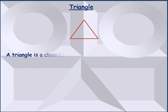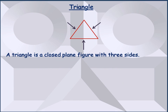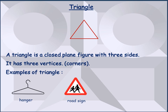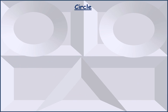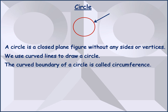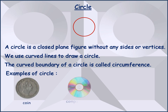A triangle is a closed plane figure with three sides and it has three vertices. Examples of a triangle are a hanger, road sign, and sometimes flags which have the shape of a triangle. A circle is a closed plane figure without any sides or vertices because we use curved lines to draw a circle. The curved boundary of a circle is called its circumference. Examples of a circle are a coin, compact disc (CD), and bangles.